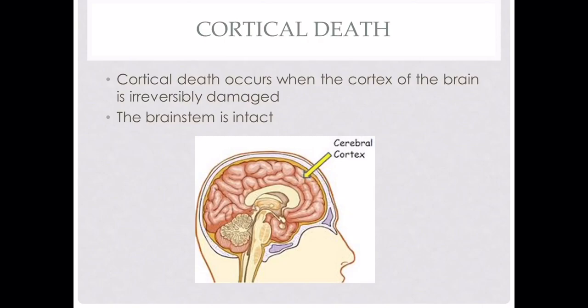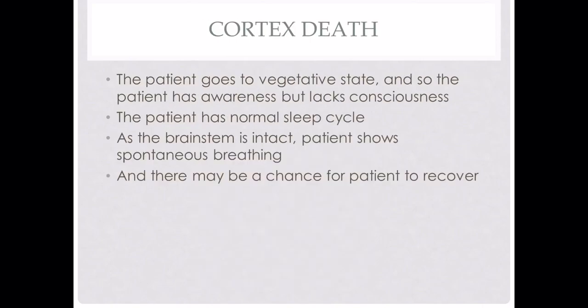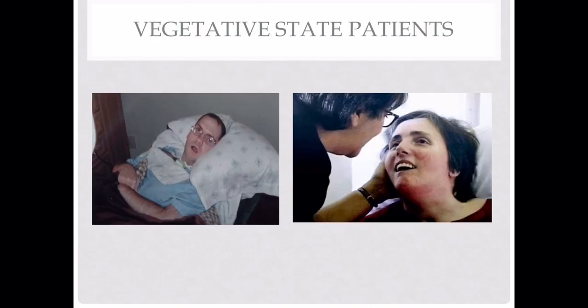In cortical death, the patient goes into a vegetative state — the patient has awareness but lacks consciousness and has a normal sleep cycle. As the brain stem is intact, the patient shows spontaneous breathing, so there is no need for a ventilator, and there may be a chance for the patient to recover. In pictures of vegetative state patients, the eyes are open, indicating awareness without consciousness, and the patients are not connected to a ventilator.